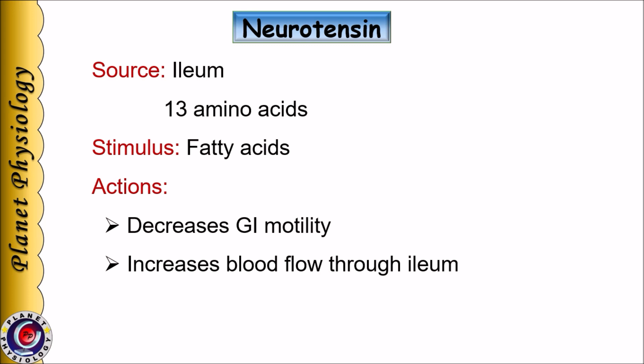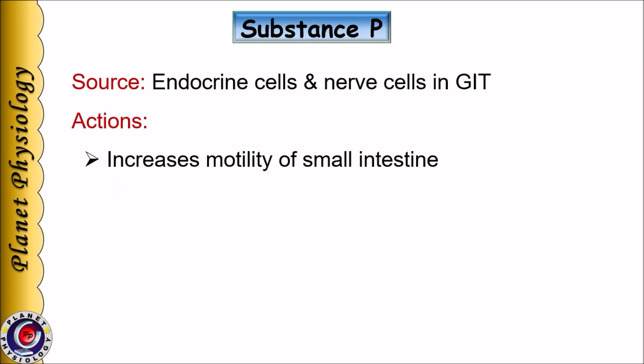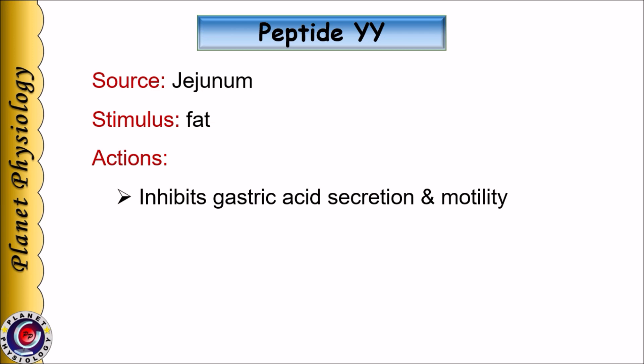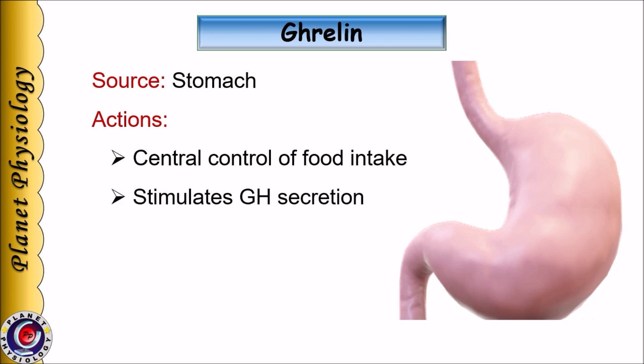Neurotensin is secreted by the ileum in response to fatty acids and contains 13 amino acids. It is responsible for decreasing gastrointestinal motility and increases blood flow through the ileum. Substance P is secreted by endocrine cells as well as nerve cells in the GI tract and increases motility of the small intestine. Gastrin releasing polypeptide (GRP) is secreted by vagal nerve endings to the G cells of the pyloric glands; it has 27 amino acids and increases gastrin secretion. Peptide YY is released from the jejunum in response to fat and inhibits gastric acid secretion as well as gastric motility. Ghrelin is a gastrointestinal hormone secreted by the stomach; it has a role in central control of food intake and also stimulates growth hormone secretion.